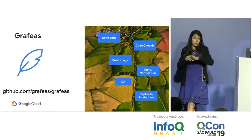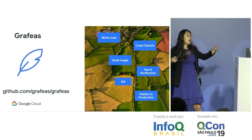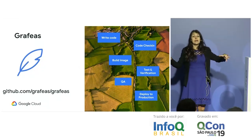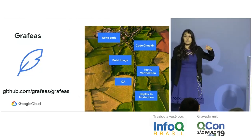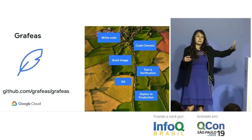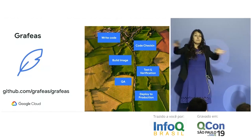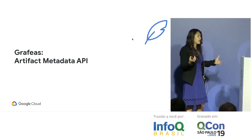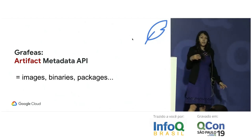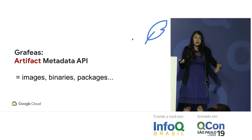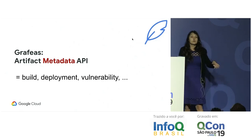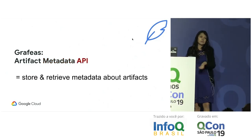Now let's talk about Grafeas. It was also developed open source first with full commit history on GitHub. In the software supply chain it represents all different steps — it's specifically meant to be a universal metadata API that can store information about source code, deployments, who submitted code and when, test results, and every stage of the supply chain. Artifacts are images, binaries, packages — any files generated as outputs of your build processes.